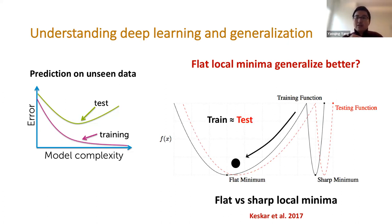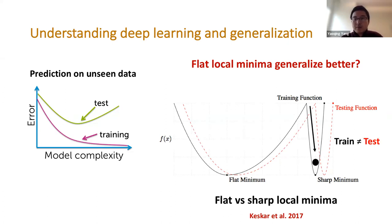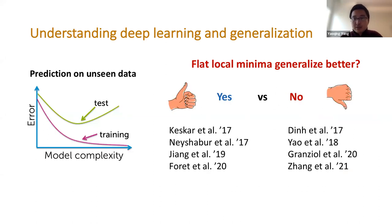If we converge to a flat local minimum, training and test loss are similar, so the model generalizes better because training is close to the test. However, if we converge to a sharp minimum, the training loss is small but the test loss is big, so the model does not generalize. Many papers have shown that the connection between flatness, generalization, and universal robustness is not that simple — it is not always true that a network should converge to a flat local minimum.